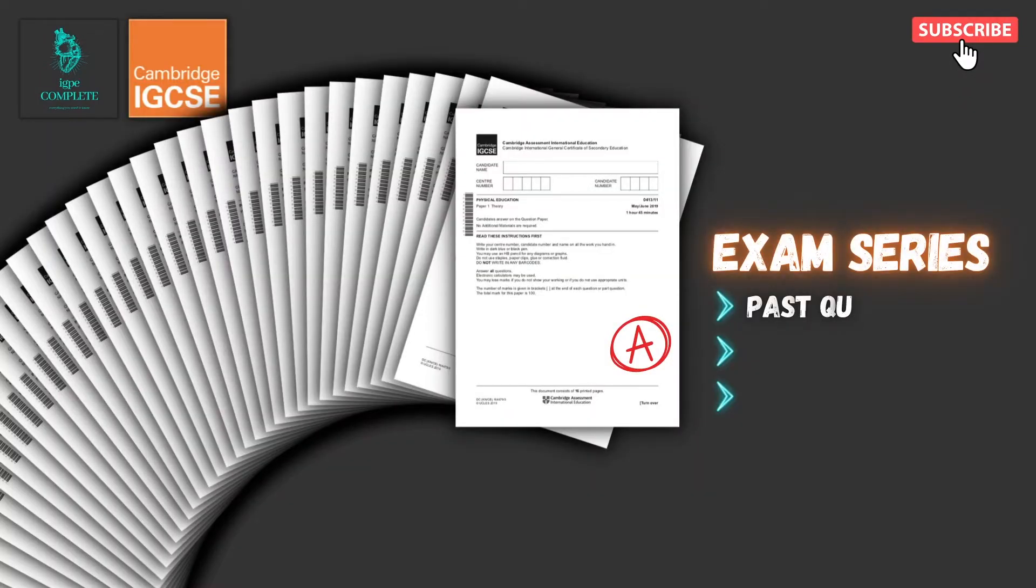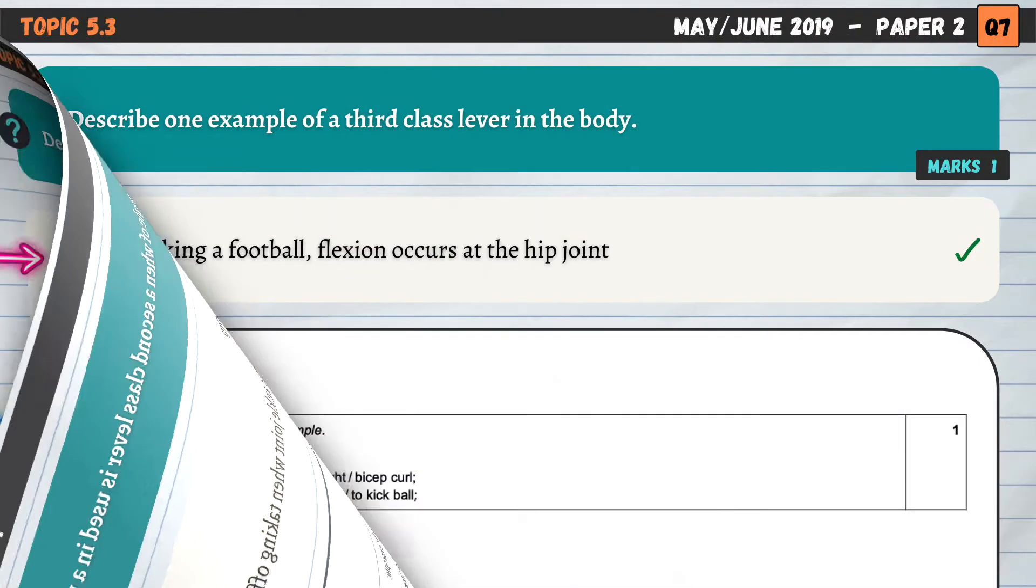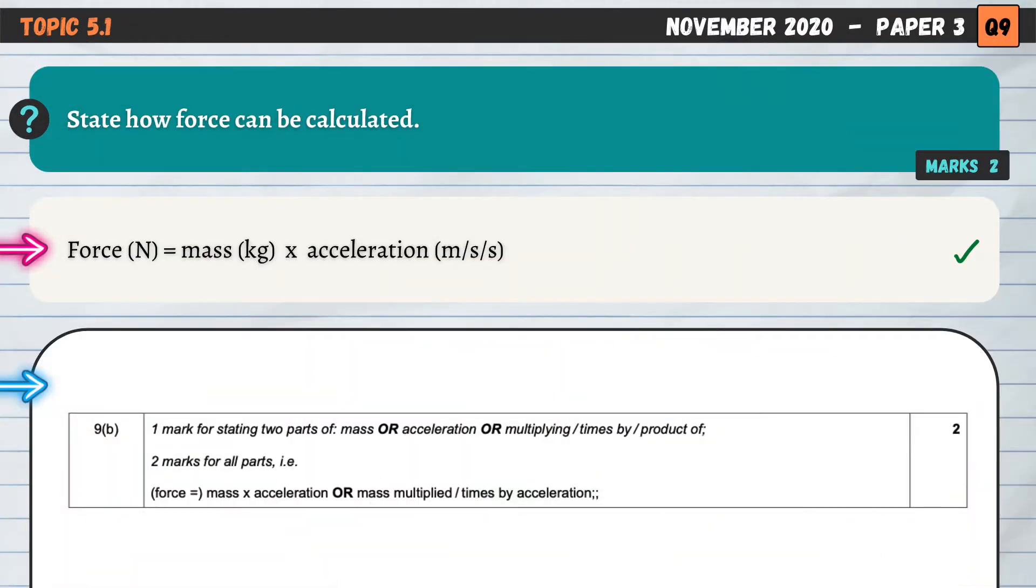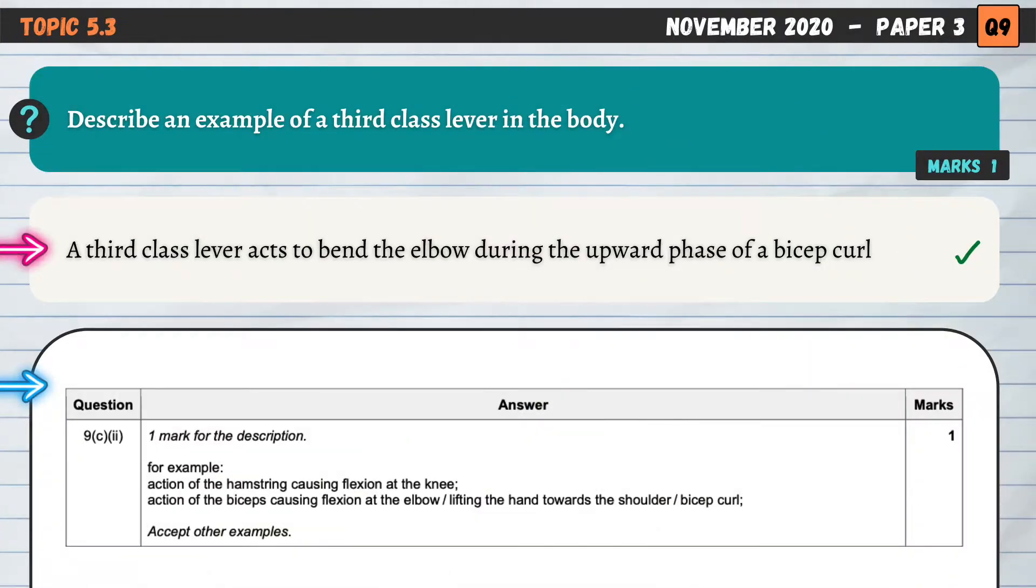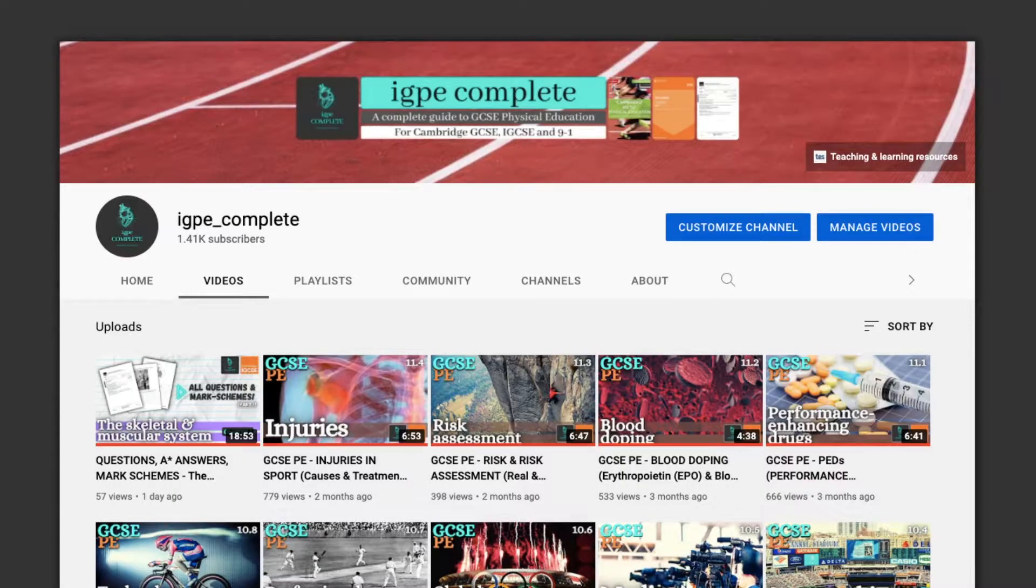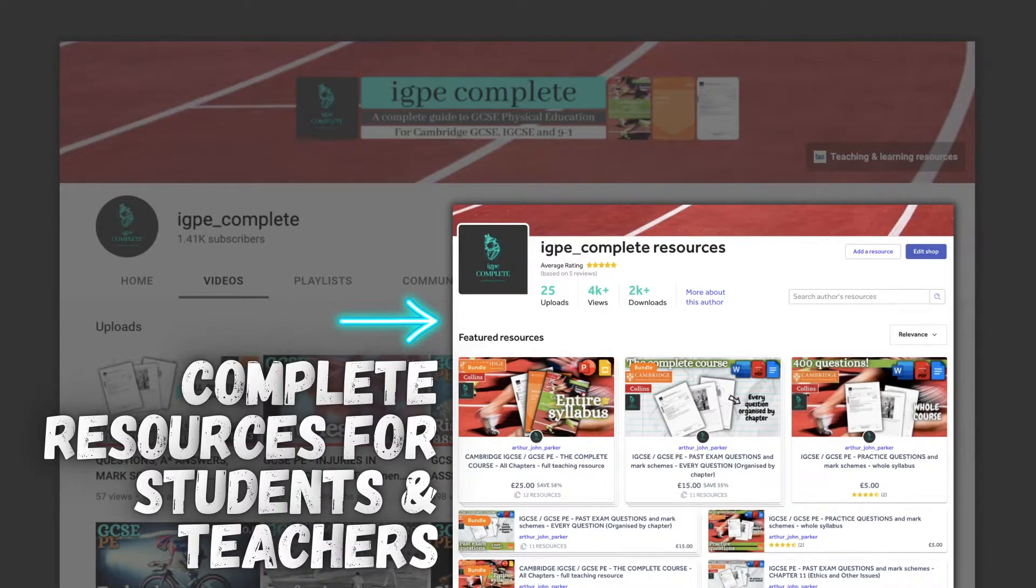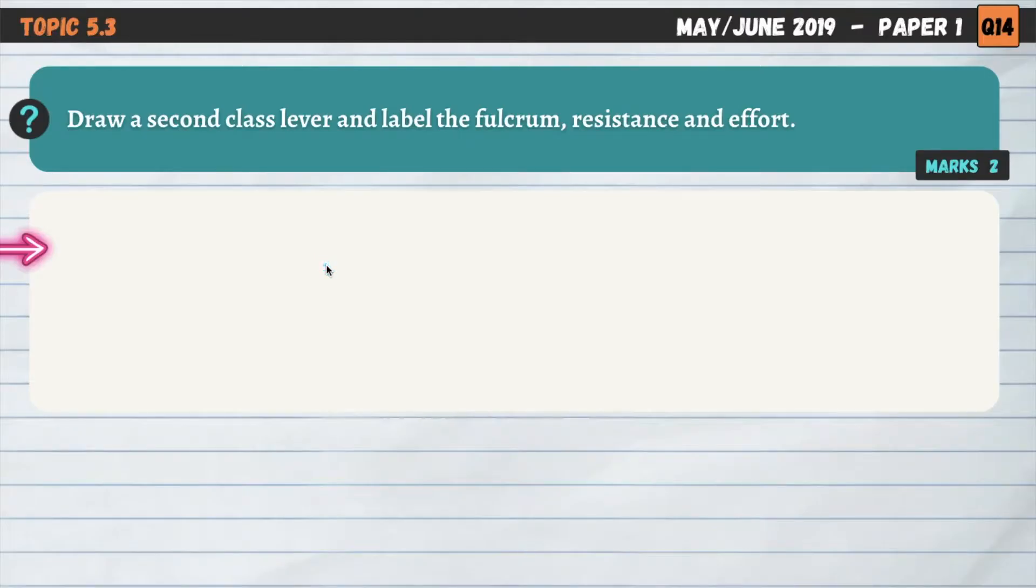Hello and welcome to another complete Cambridge IGCSE PE lesson. In this video, we'll break down and simplify 11 recent past exam questions on Chapter 5, Simple Biomechanics. If you enjoy this video, consider subscribing to the channel, give the video a thumbs up, and visit my channel page for short summary videos and my resource store by clicking the link in the description for complete revision and teaching materials. Let's begin.